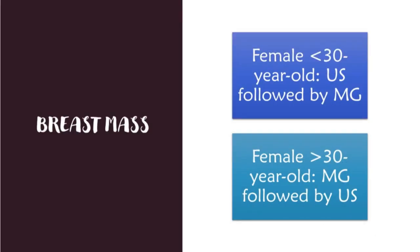For breast mass guidelines, 30 years of age is your cutoff. For a female less than 30 years of age with a breast mass, perform ultrasound first, followed by mammography. If the lady is older than 30 years of age, perform mammography first, followed by ultrasound. This is super high yield — remember the 30-year cutoff: under 30, ultrasound first; over 30, mammography first.